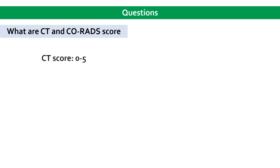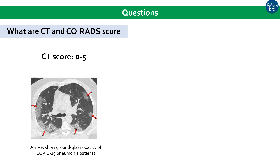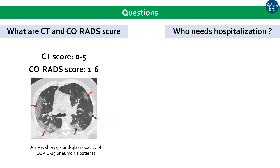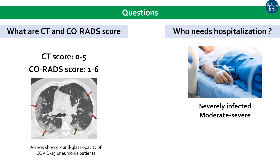The results are reported as a CT severity score ranging from 0 to 5, where 0 signifies normal healthy lungs and 5 means the patient is severely infected with COVID-19, representing more than 75% infection. Similarly, the CO-RADS score lies between 1 to 6 and also tells about lung health; a CO-RADS higher than 4 most likely indicates COVID-19 infection. Only severely or moderately infected patients, particularly those with other conditions like diabetes, may need hospitalization as suggested by a doctor; others may recover at home with medication.